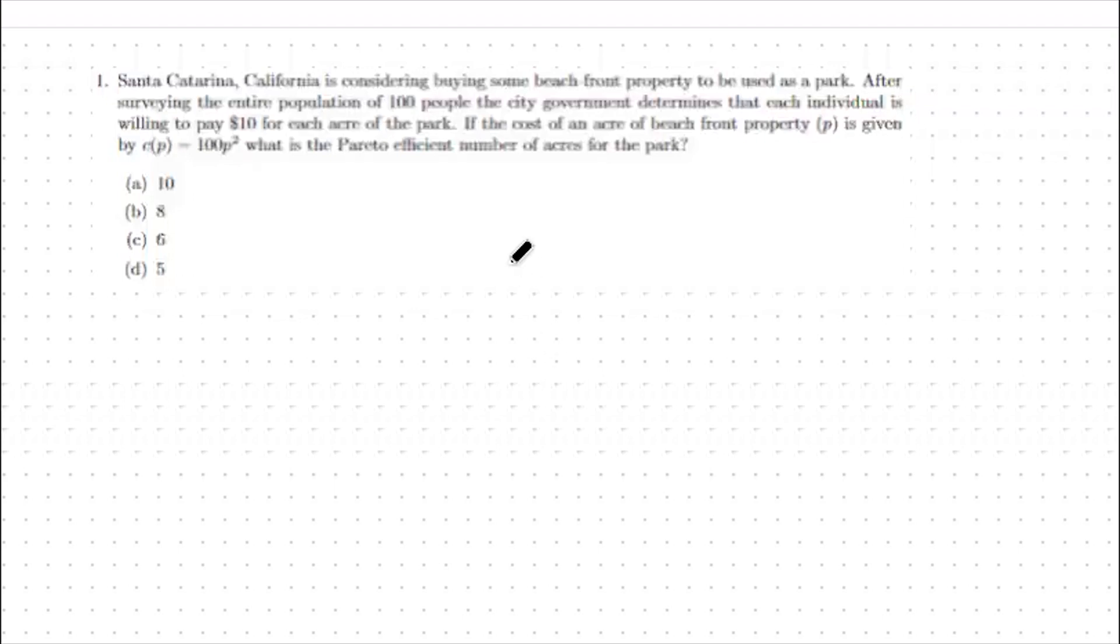Hello. Today we're going to go over public goods. With public goods, what you're trying to do is set marginal social benefit equal to marginal social cost.